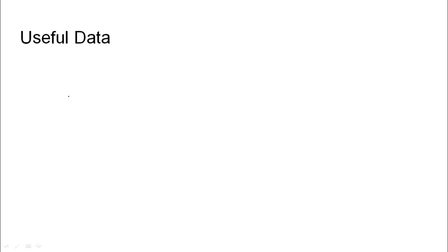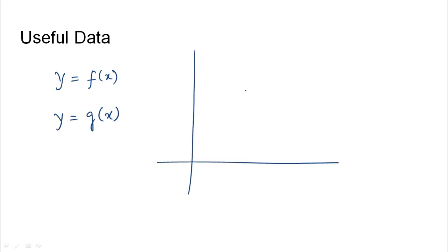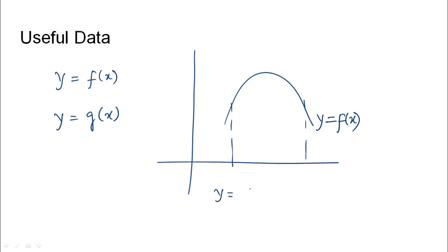When we are given two functions such as y equals f(x) and y equals g(x), to find the area bounded between these two functions, we plot the functions on the coordinate axis. The area under the function y equals f(x) between two points is given by the integration of f(x) dx between the two points x1 and x2.